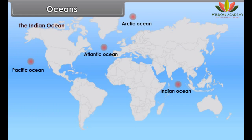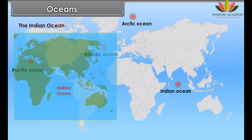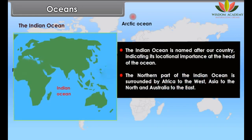The Indian Ocean is named after our country, indicating its locational importance at the head of the ocean. The northern part of the Indian Ocean is surrounded by Africa to the west, Asia to the north, and Australia to the east.